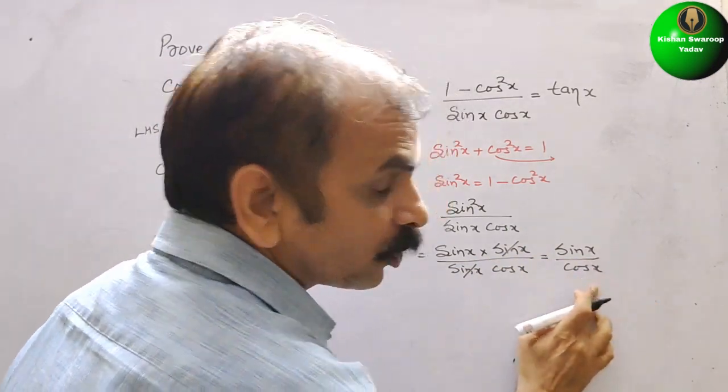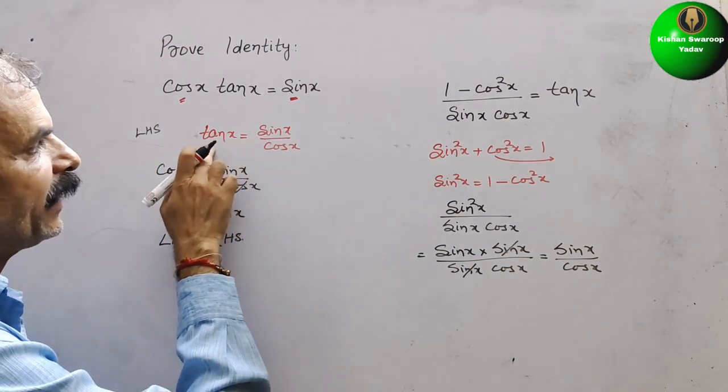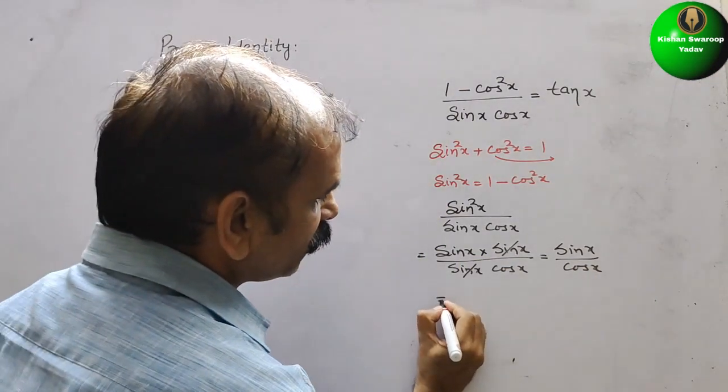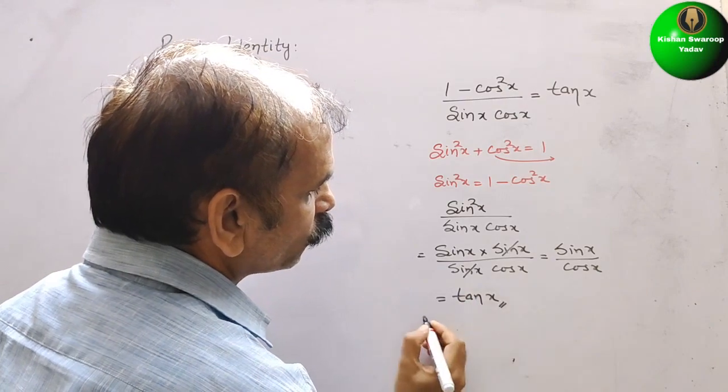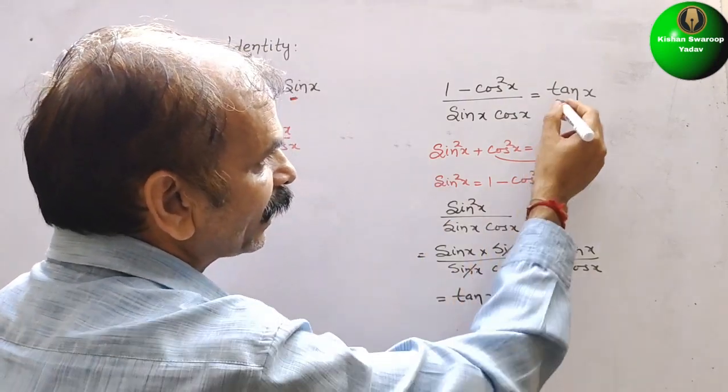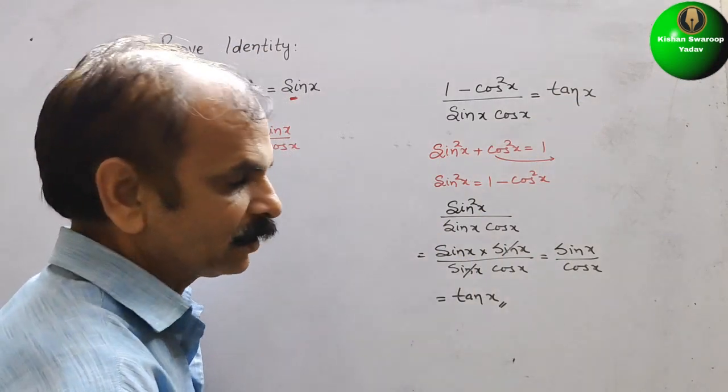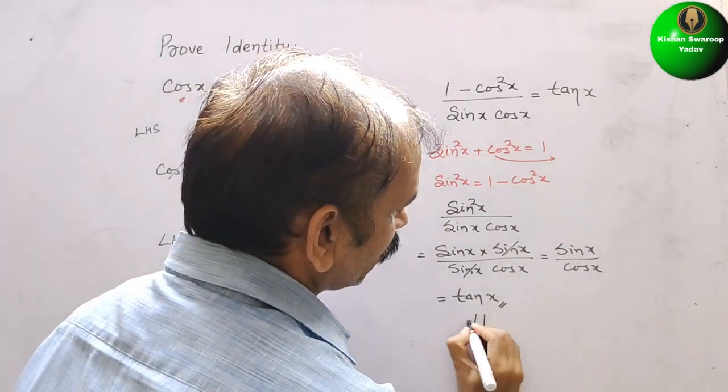So sin x by cos x is what? Tan x. So this is equal to tan x. This is your LHS and this is your RHS. So we can say hence proved.